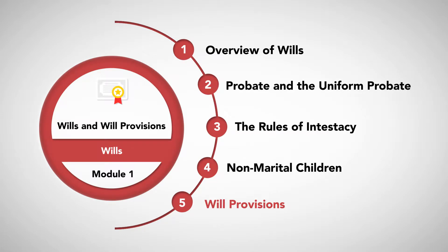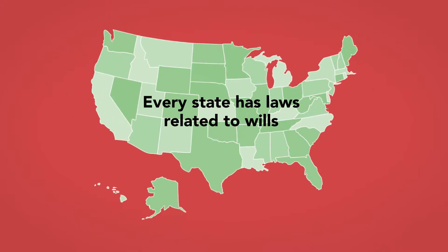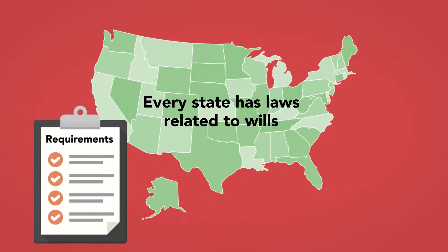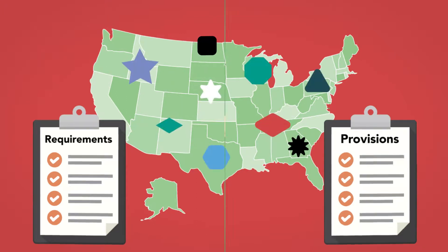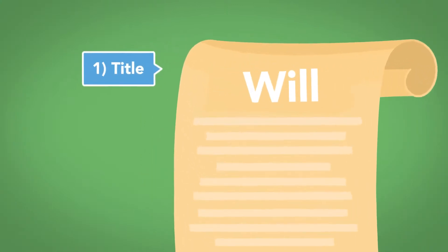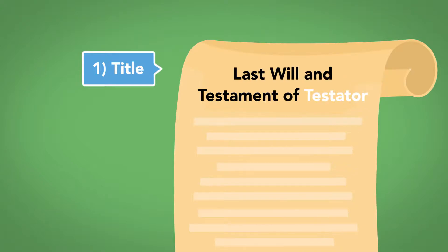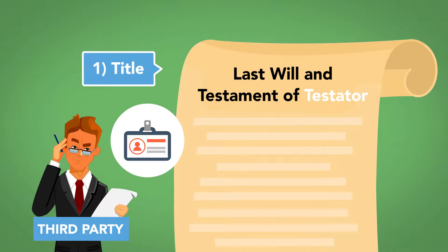Will Provisions. Every state has laws related to wills, including requirements for a valid will and the types of provisions that must or may be included. Although state laws vary, most valid wills have most or all of the following common provisions. Number 1: Title. Wills are typically titled 'Last Will and Testament of' with the testator's name, allowing a third party to easily identify the creator and purpose of the document.